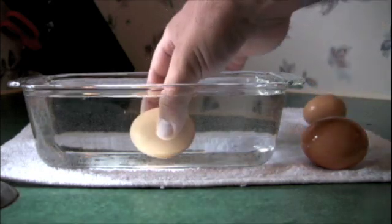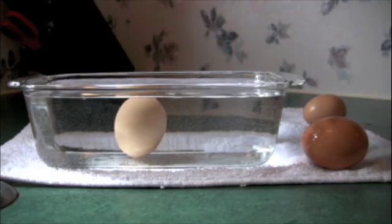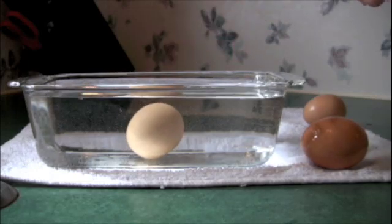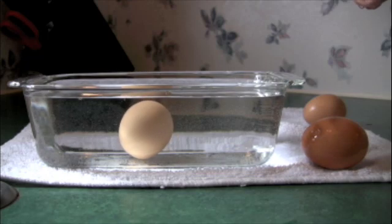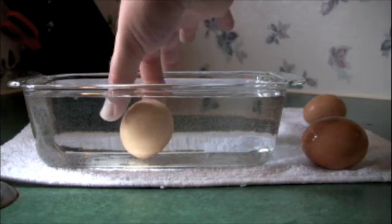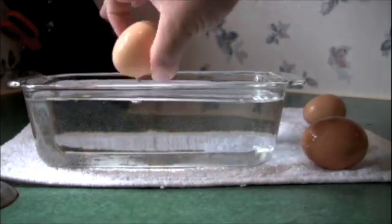The second egg is three to four weeks old and is nearing the end of its freshness. As you can see, it wants to stand up on its end, but still touches the bottom. This type of egg is good for baking. They are also good for hard boiling as they will peel easier.